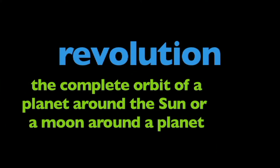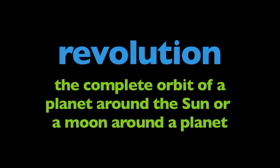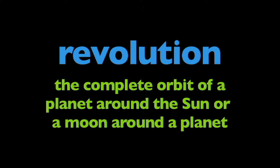In this program, we're going to learn about revolution. What is revolution? In astronomy, or the study of space, revolution refers to the complete orbit of a planet around the sun, or a moon around a planet.